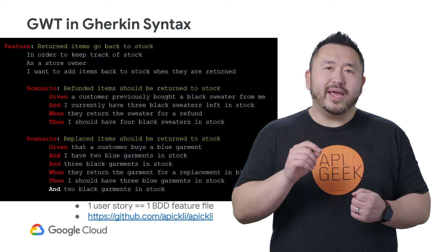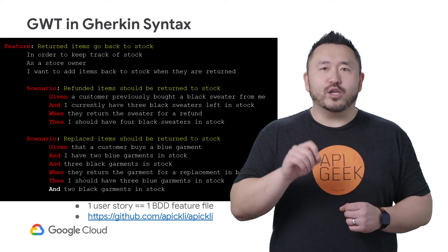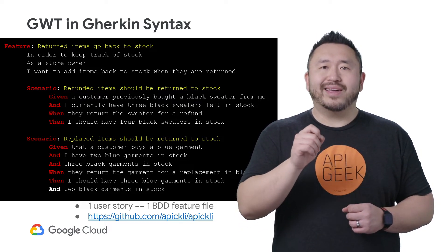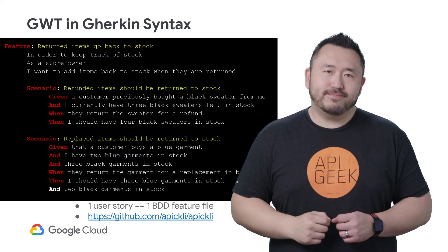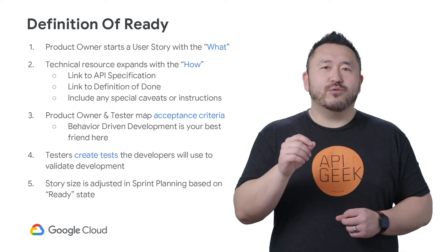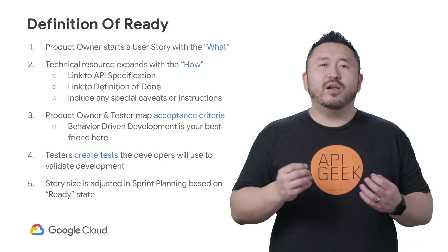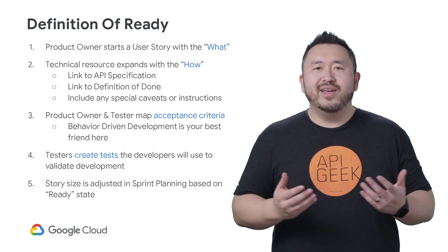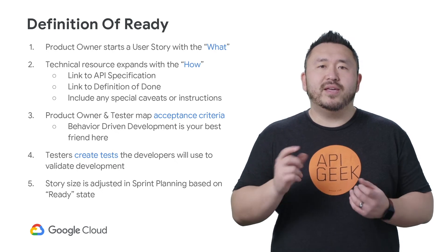By writing a Gherkin .feature file, as shown, we capture our tests in a structured but human language. Using a tool like Apically, it converts the writing directly into a test script syntax. Taking one step back, all of this elaboration work for the user story is the effort to get it ready for development. The idea is that all the dependencies a developer might have — on requirements, technical solution, and acceptance criteria — are clearly laid out and meet the team's definition of ready.